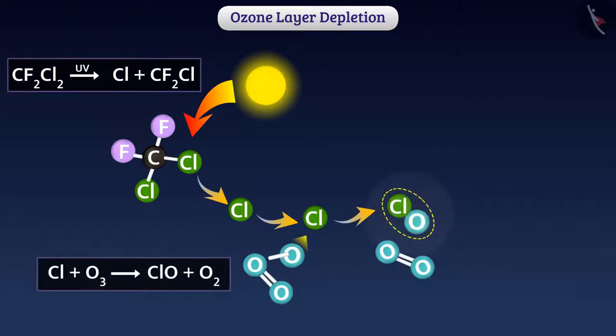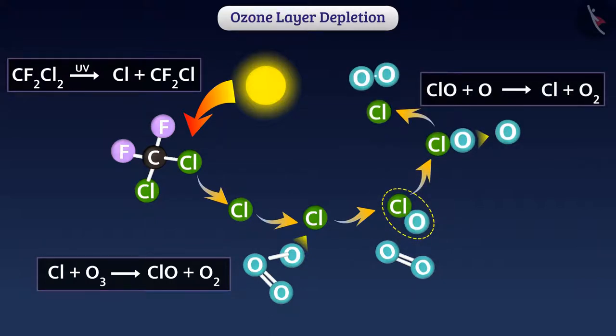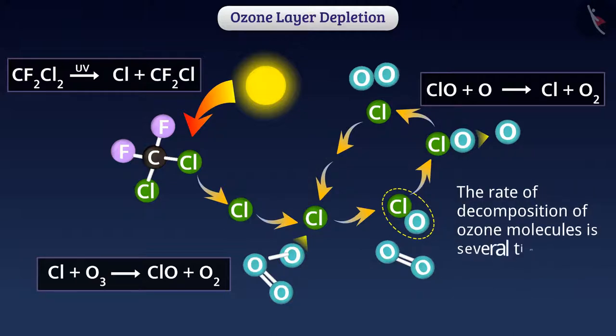Chlorine atoms, in turn, decompose ozone molecules into oxygen. One atom of chlorine is capable of decomposing about 1 lakh molecules of ozone. The rate of decomposing of ozone molecules is several times higher than its formation.